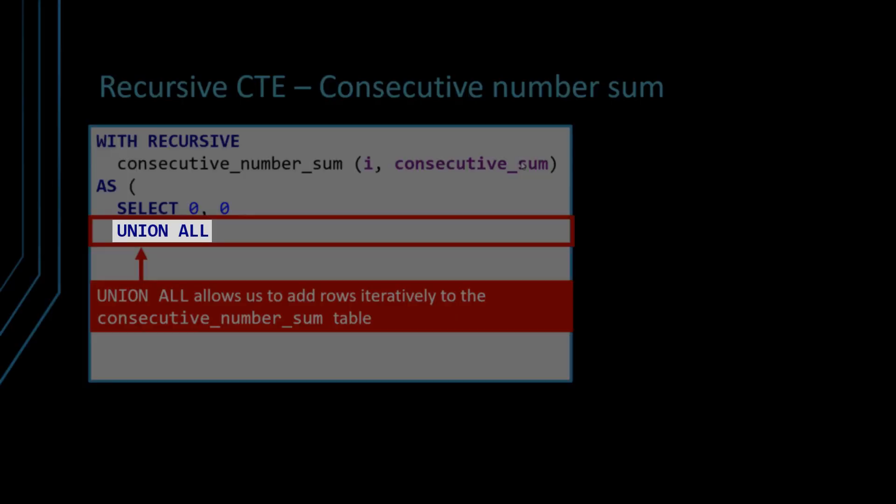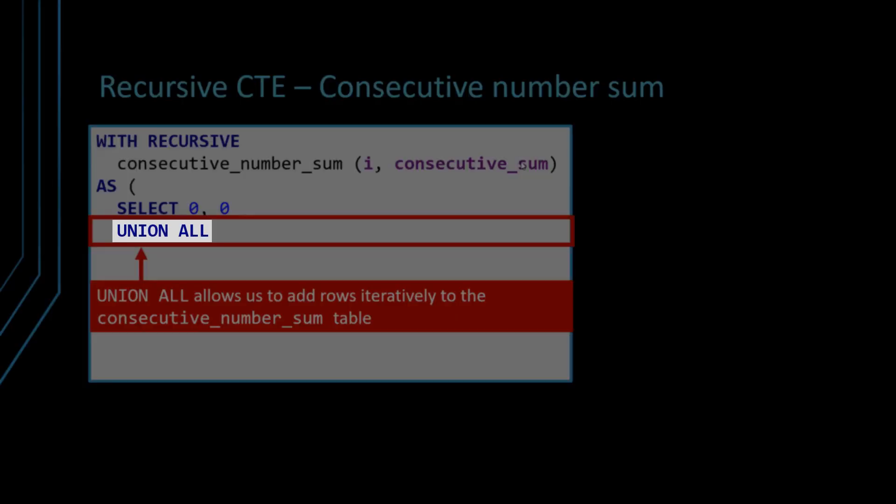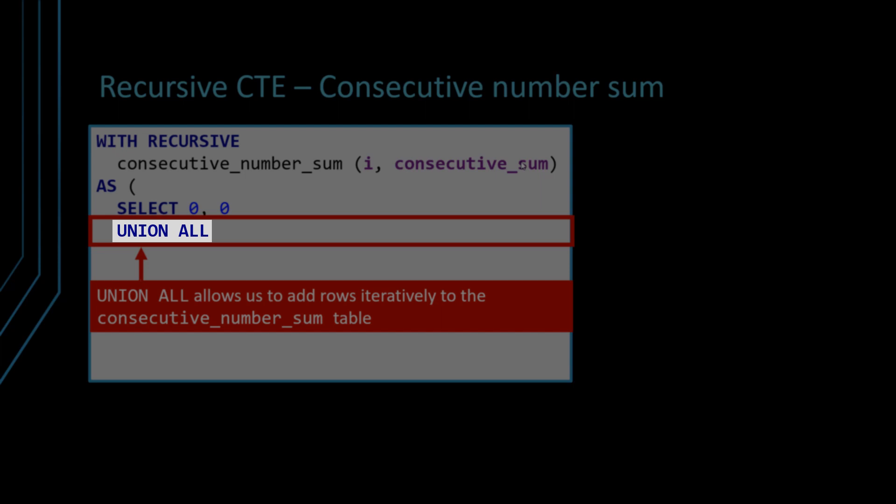We're using then Union All. Why? Because you keep on adding records to your result set. So if this were the first record,